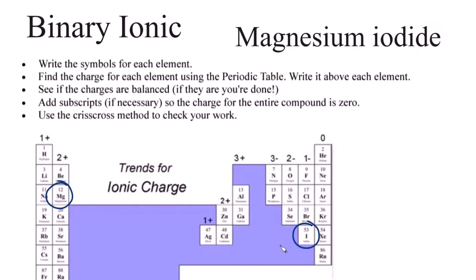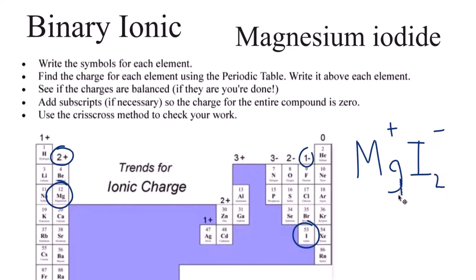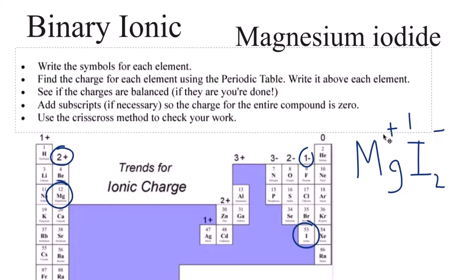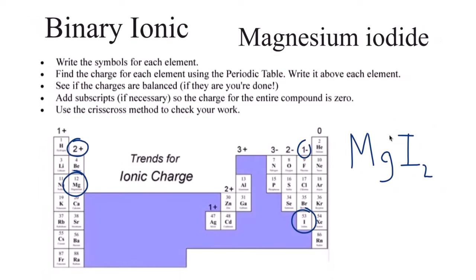Now you try one — magnesium iodide. Write the element symbols for both elements, write the charges: two plus and one minus. Crisscross: move the two here and we don't write the one by convention. That gives you MgI₂.